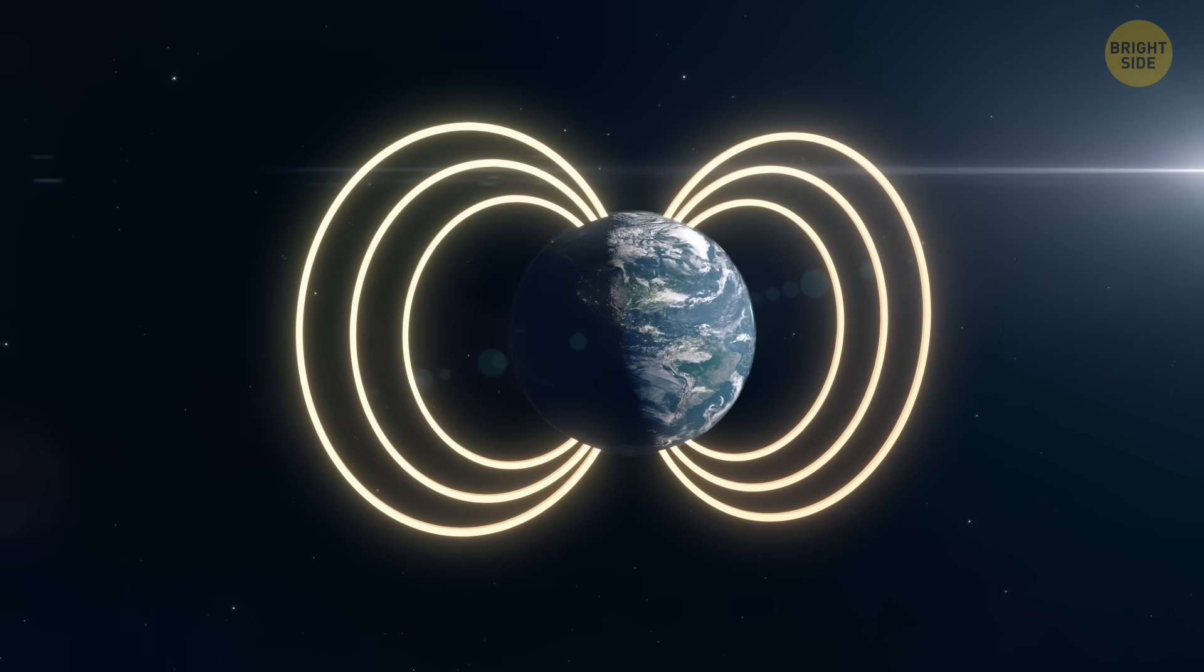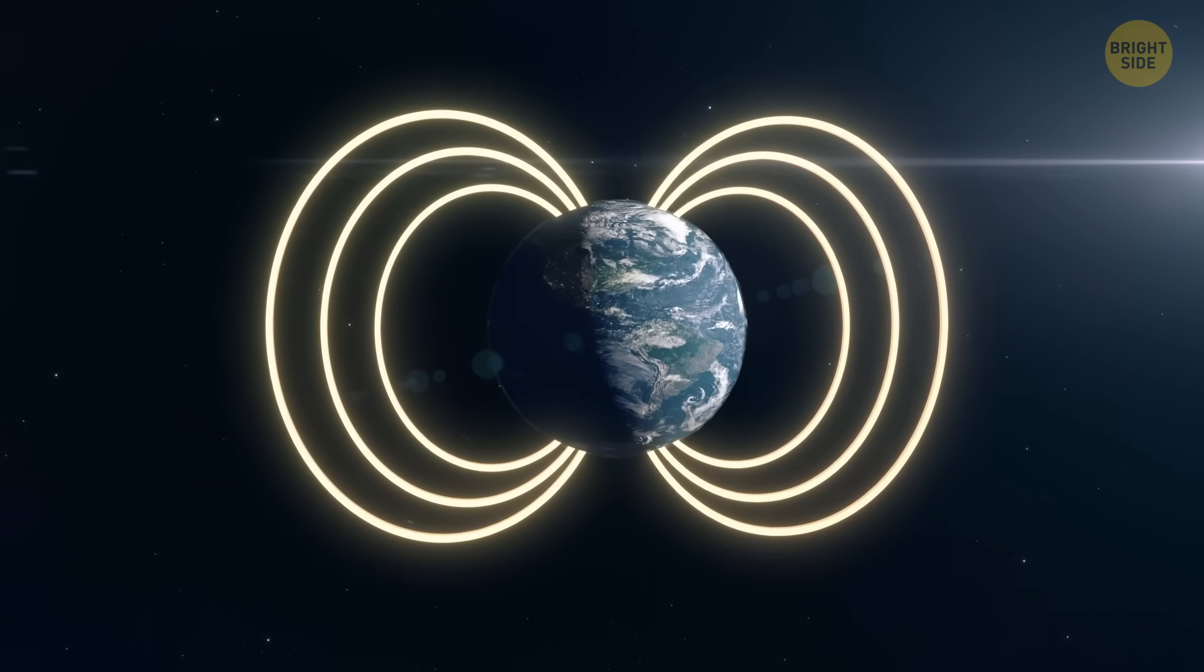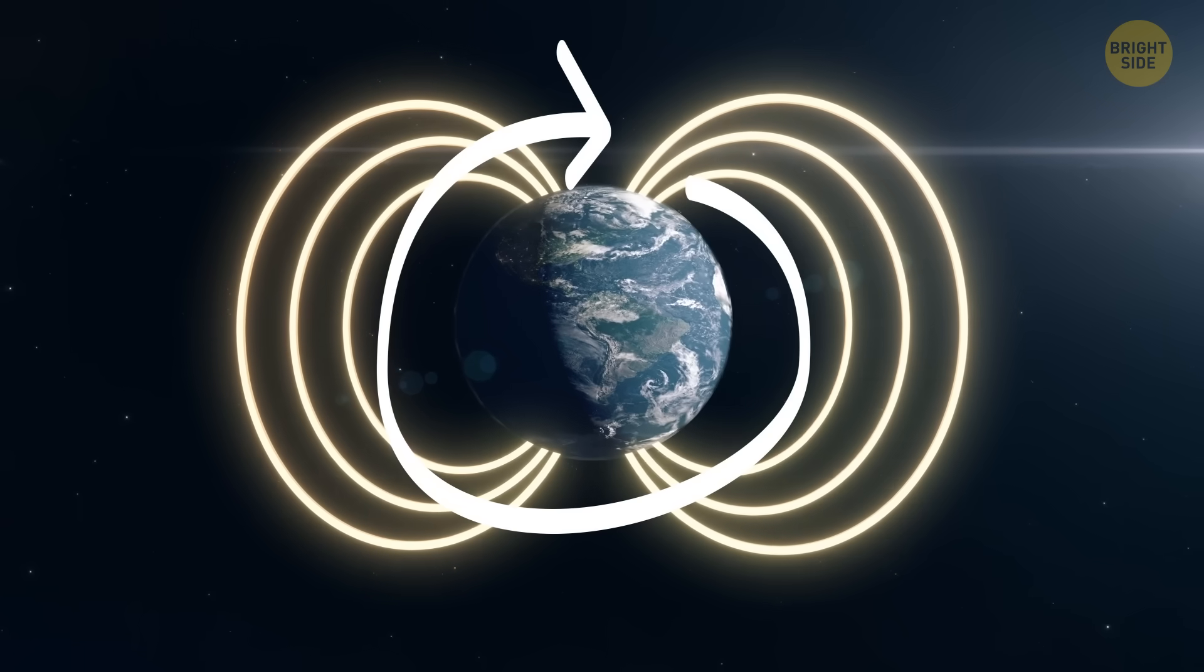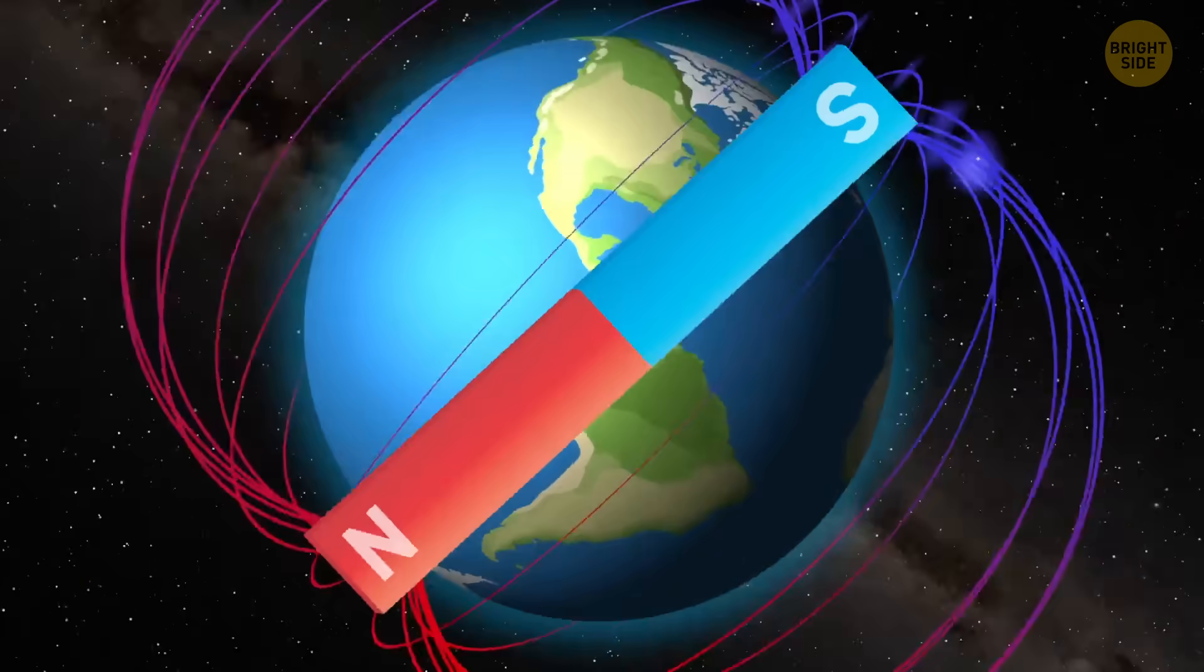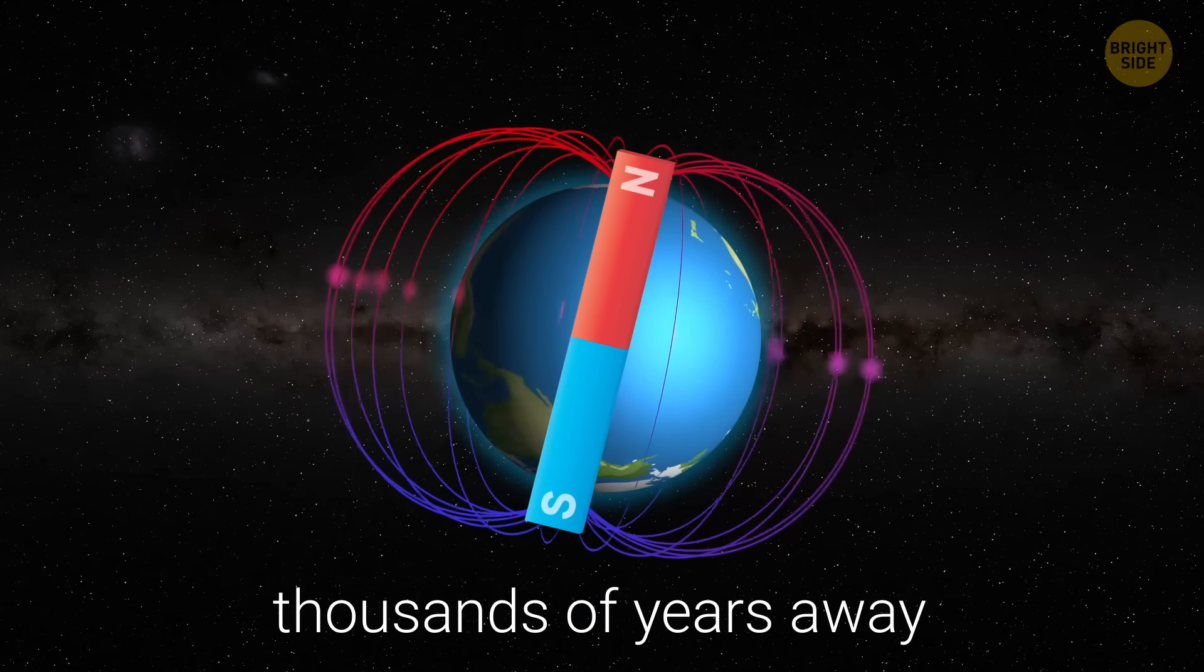The good news is, these flips take over. On average, Earth flips its magnetic poles about two times per million years. That means the next reversal could be hundreds of thousands of years away.